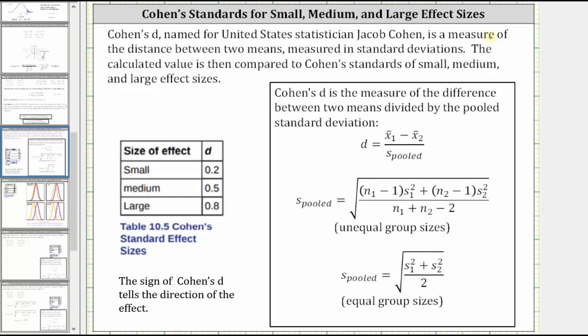Cohen's d, named for United States statistician Jacob Cohen, is a measure of the distance between two means measured in standard deviations. The calculated value is then compared to Cohen's standards of small, medium, and large effect sizes shown in the table below.